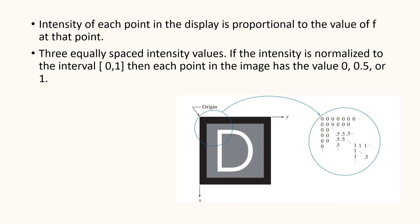The second representation is more common and shows f as it would appear on a computer display or photograph. Here in the given image, you can notice that the intensity of each point in the display is proportional to the value of f at that point. If the intensity is normalized to the interval [0,1], then each point in the image has a value of either 0, 0.5, or 1.